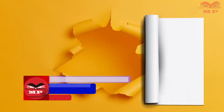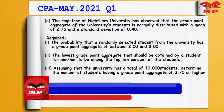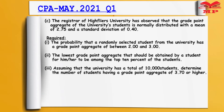The next is question 1C, which retains the syllabus. The registrar of High Flyers University has observed that the grade point aggregate of the university students is normally distributed with a mean of 2.75 and a standard deviation of 0.4. Required, Roman 1: the probability that a randomly selected student from the university has a grade point aggregate of between 2 and 3.